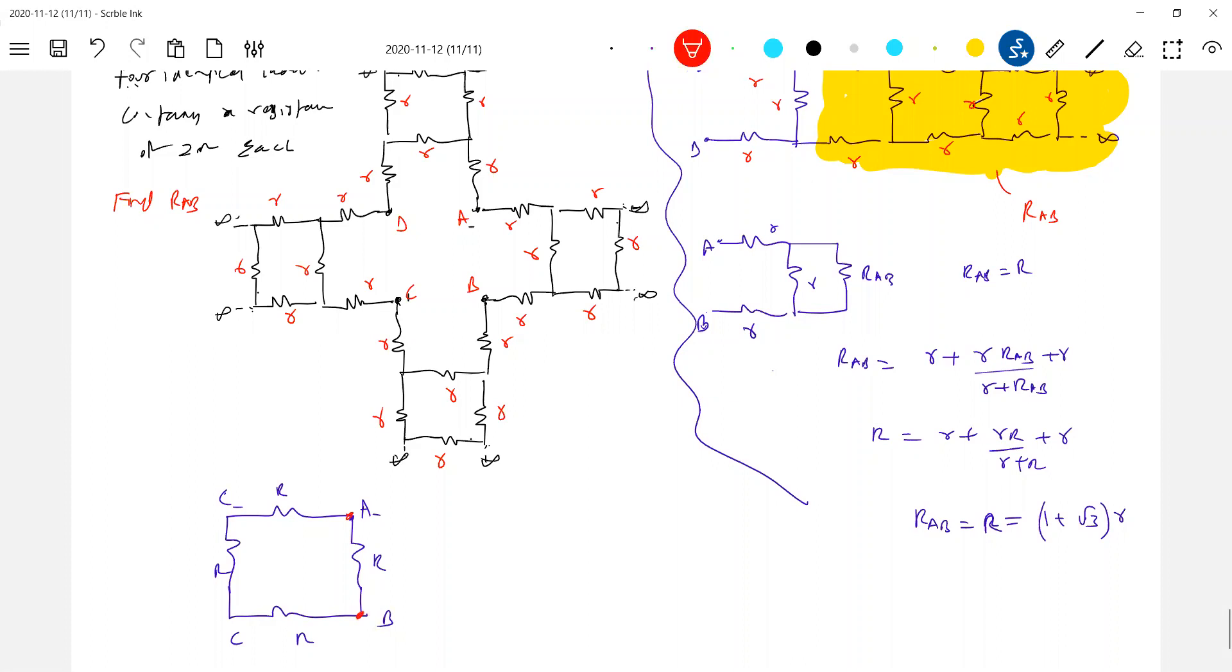How to do this RAB? RAB net according to this diagram should be equal to r into 3R divided by r plus 3R, which is 3R by 4. This will be 3 by 4 times 1 plus root 3 into r.